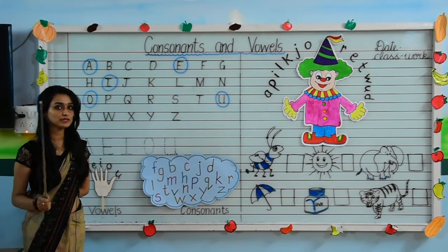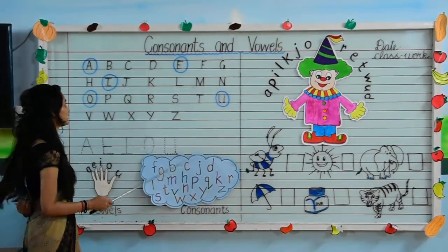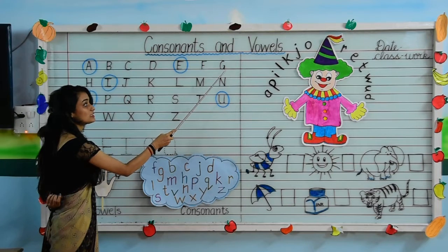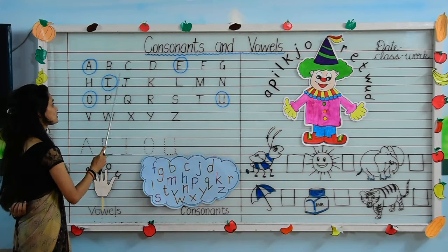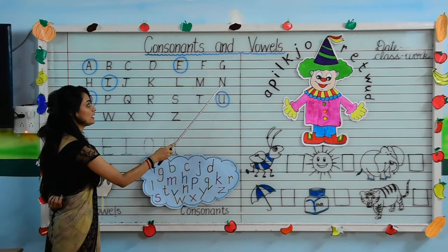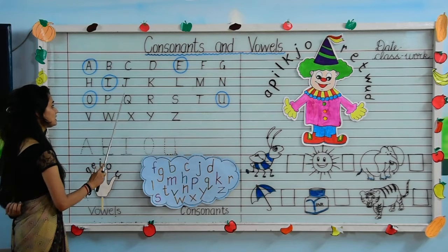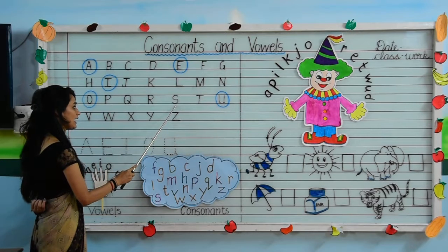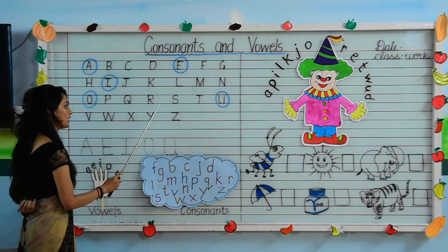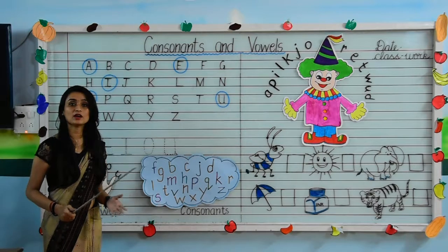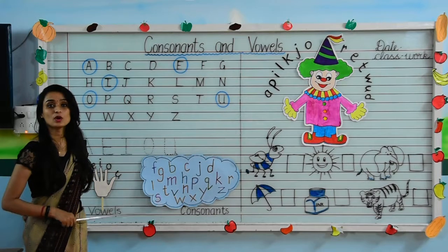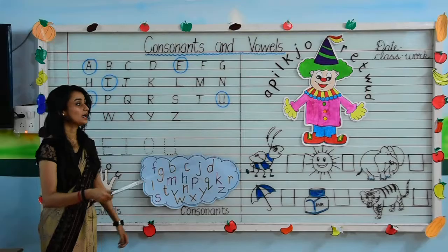And the rest of the other letters are consonants, as I just told you with the help of the tool. The consonants are B, C, D, F, G, H, J, K, L, M, N, P, Q, R, S, T, V, W, X, Y, and Z. These are all 21 consonants.